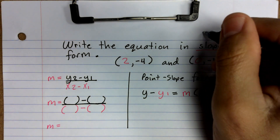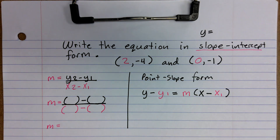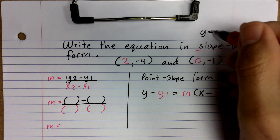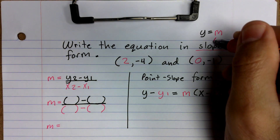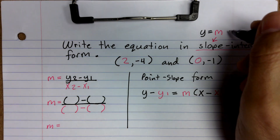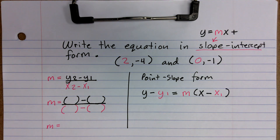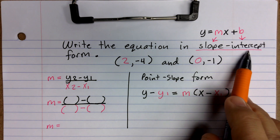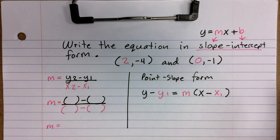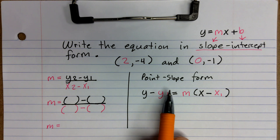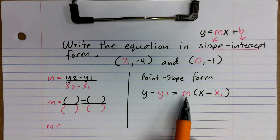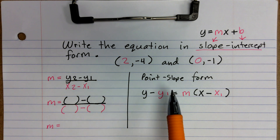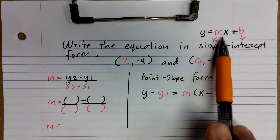Slope-intercept form — think back to 8th grade math and Algebra 1 — is the form where y is equal to m times x plus b, where m is the slope and b is your y-intercept. That's why they call it slope-intercept form: it has the slope first, then the intercept. We call the other one point-slope form because we have a point — a value from an ordered pair — and then we have the slope. Now let's utilize these two equations to arrive at slope-intercept form.